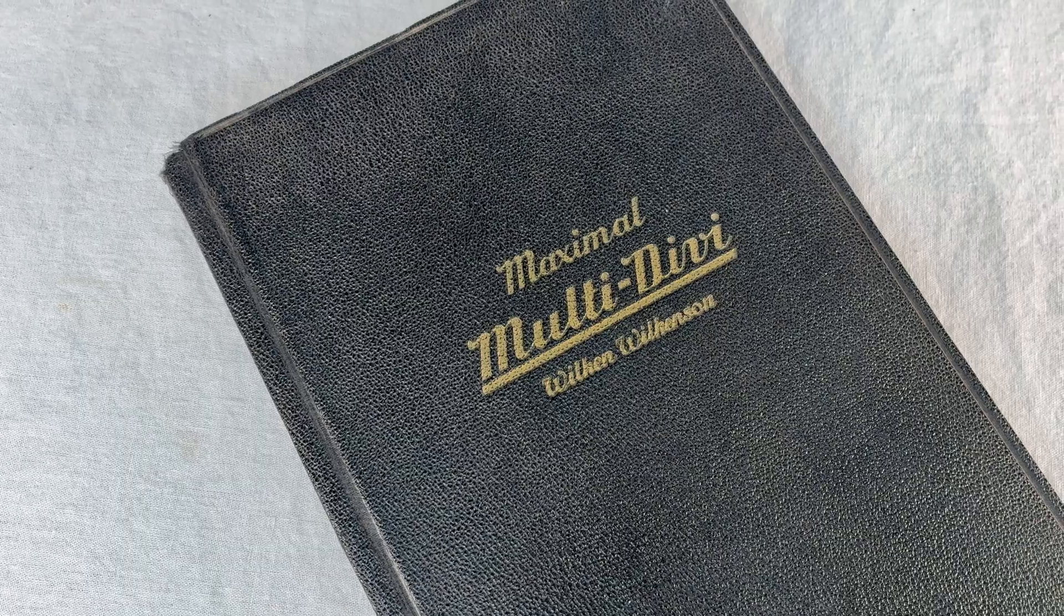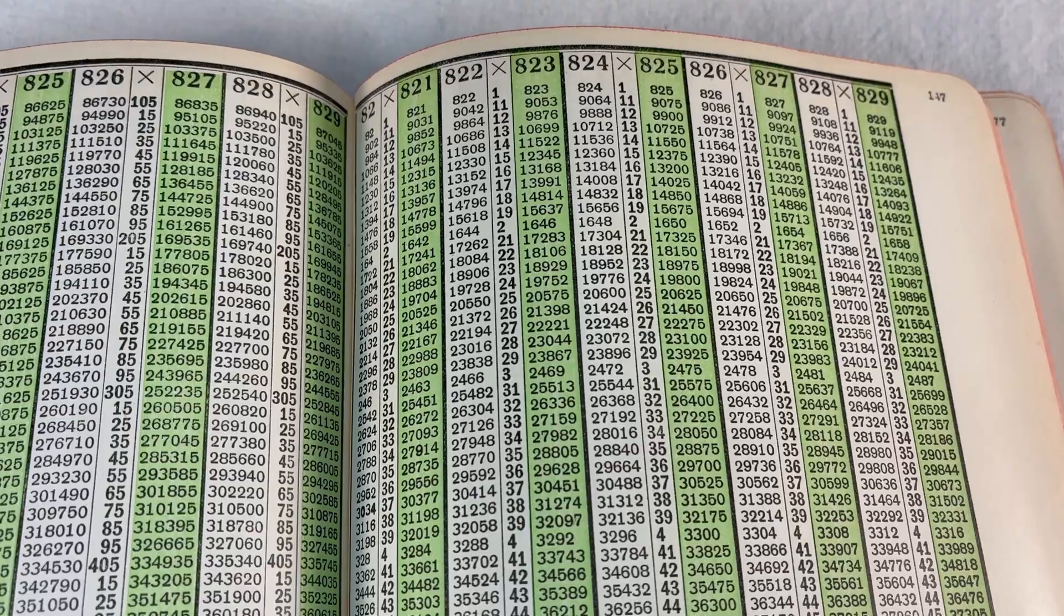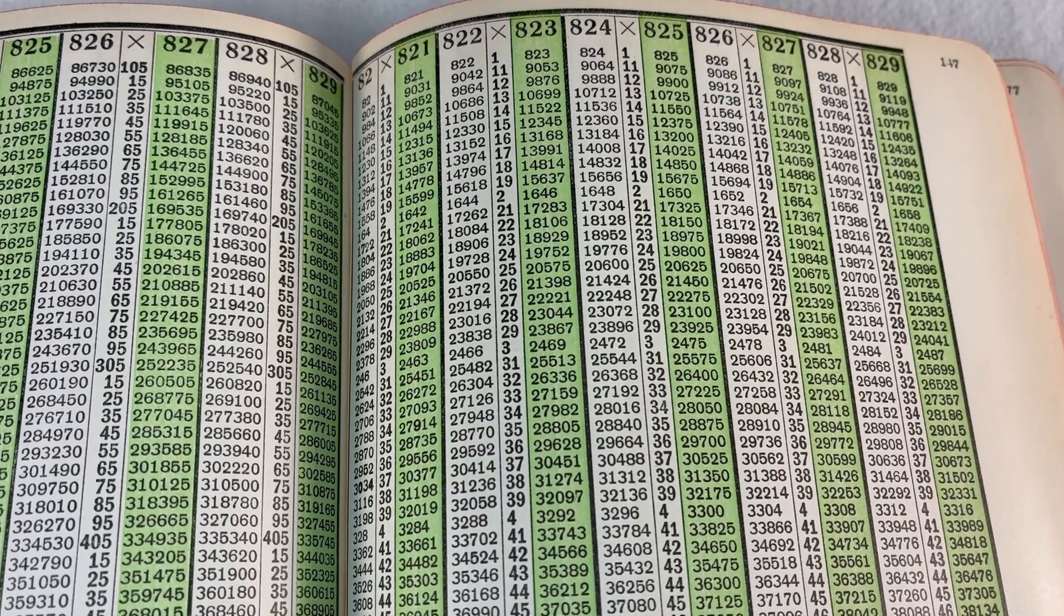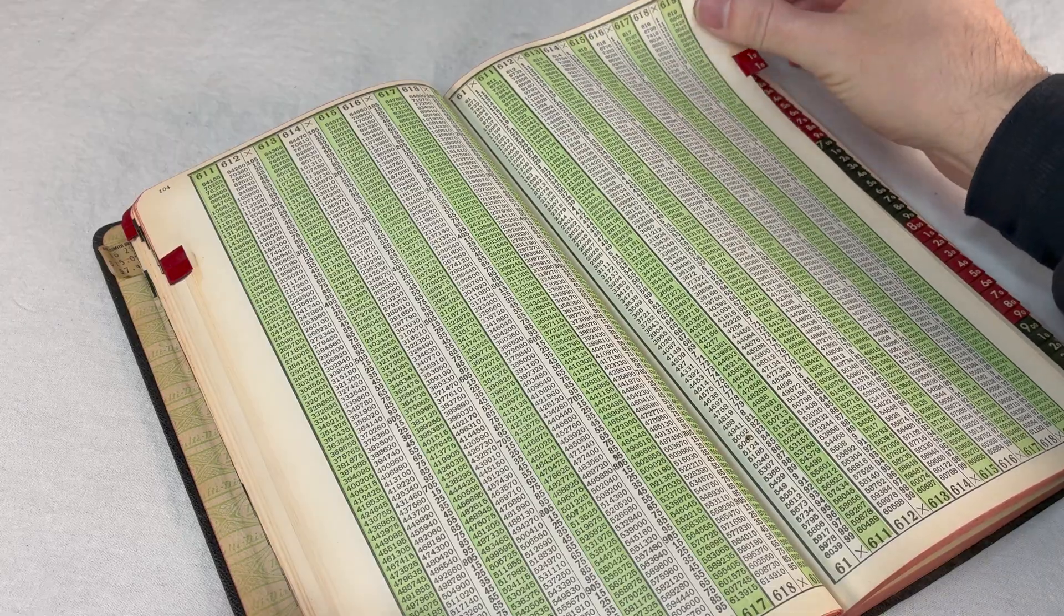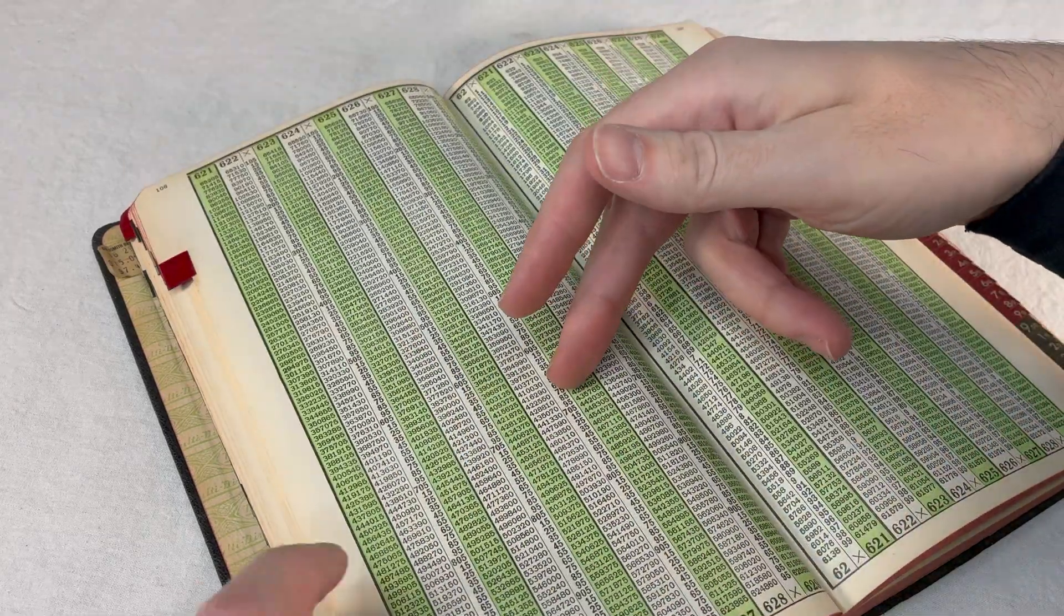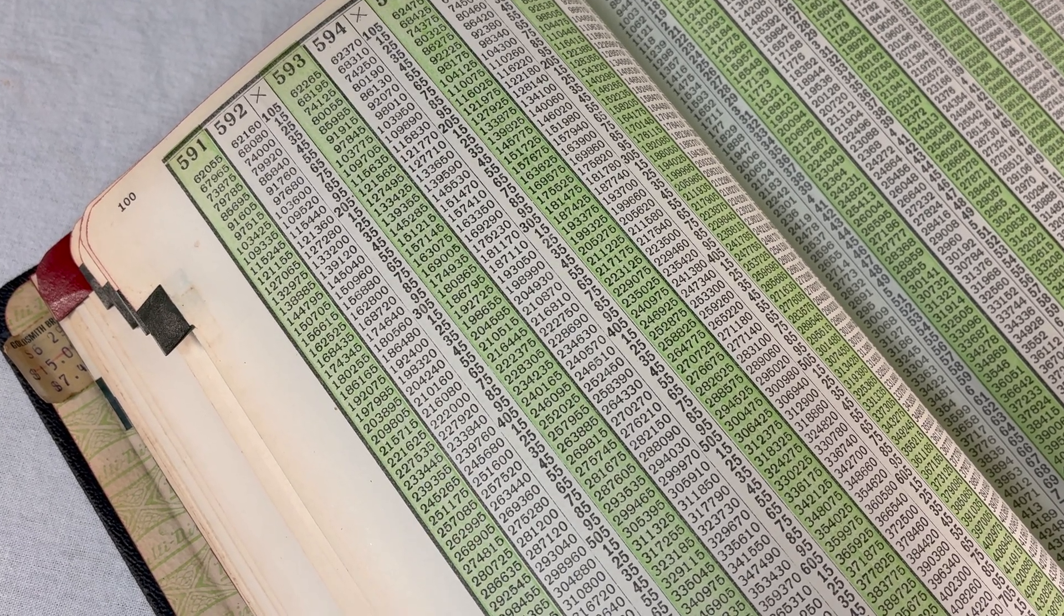But this thing, Vilken Vilkensen didn't just set it up for me to calculate. He actually did all the calculations ahead of time. Like when I multiply with the multi-divi, it's not just as if Vilken was doing the calculation for me. He actually really did do it. He did it for me. For us all.